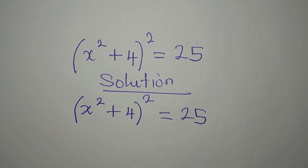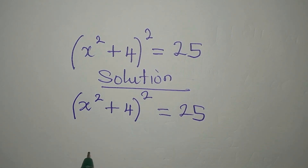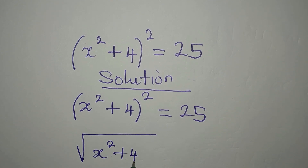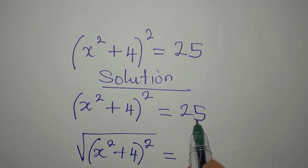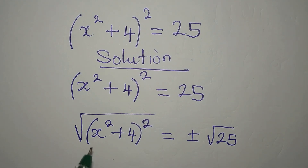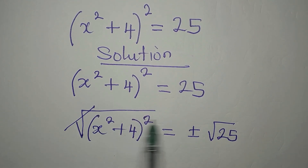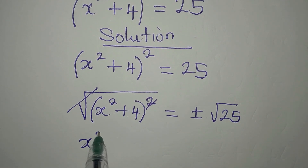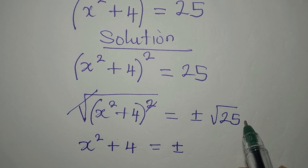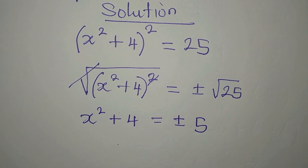The first thing is to remove this square, and to do that we'll take the square root of both sides. That means on the other side we'll have plus or minus the square root of 25. Since we introduced the square root it has to reflect on both sides of the equation, which removes the square, and we have x² + 4.